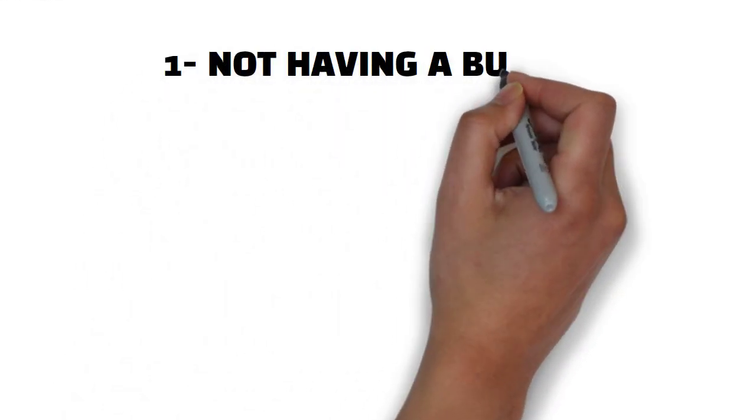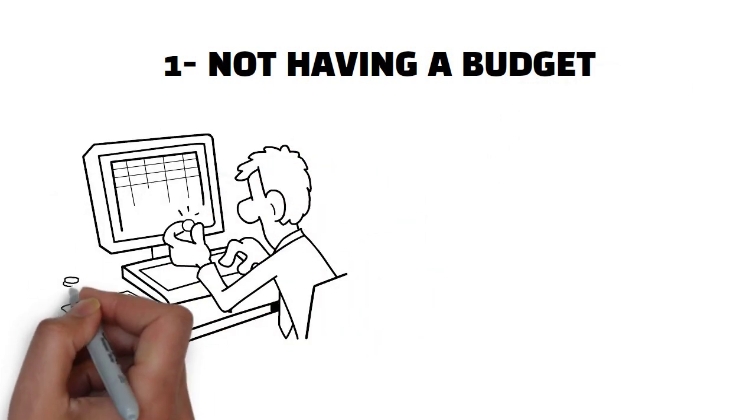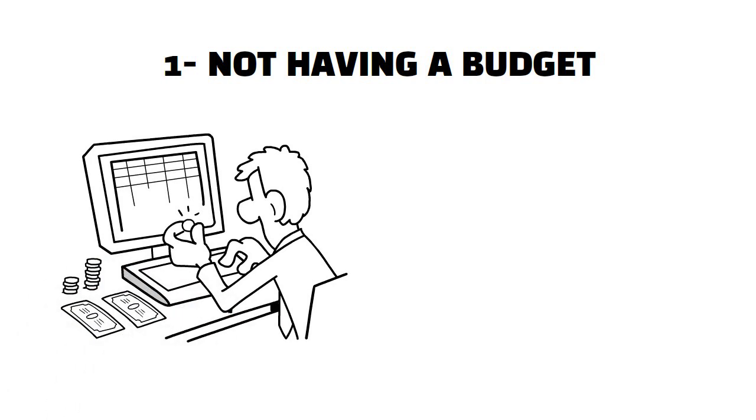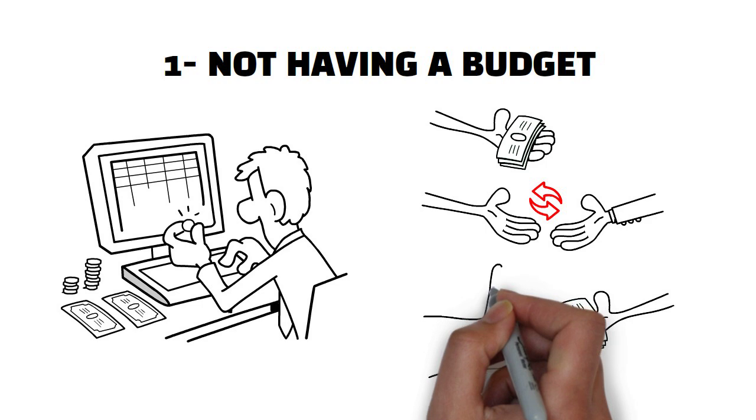1. Not having a budget. Without a budget, it's challenging to track your expenses, save money, or plan for the future. Create a budget that outlines your income and expenses, and stick to it religiously.